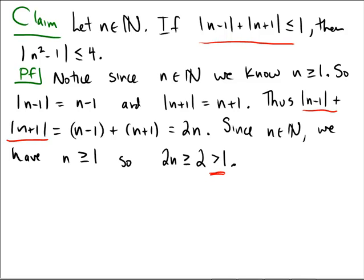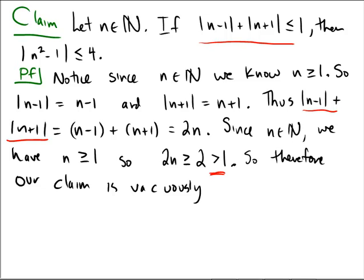Therefore, our claim is vacuously true — vacuously true because it has a false antecedent. A false antecedent means the statement is vacuously true.